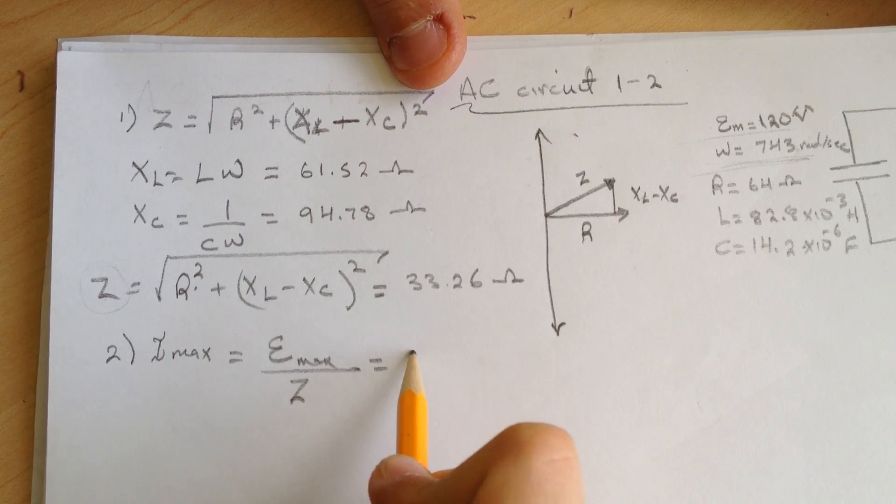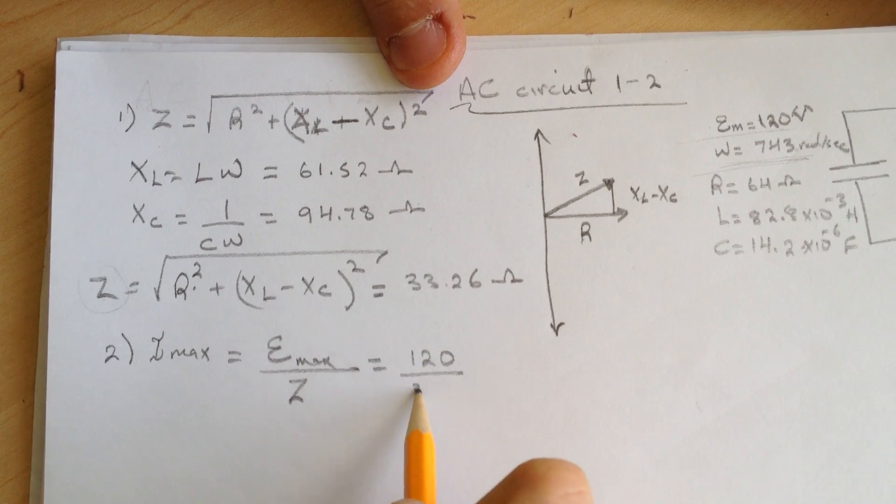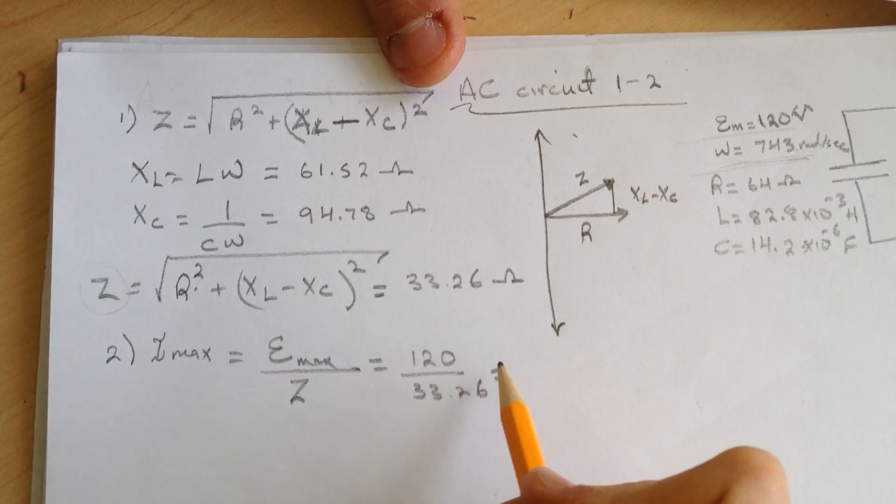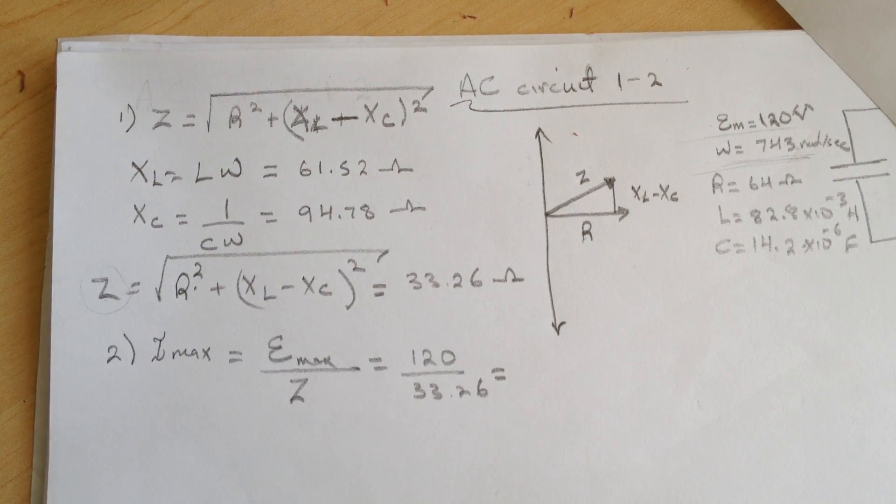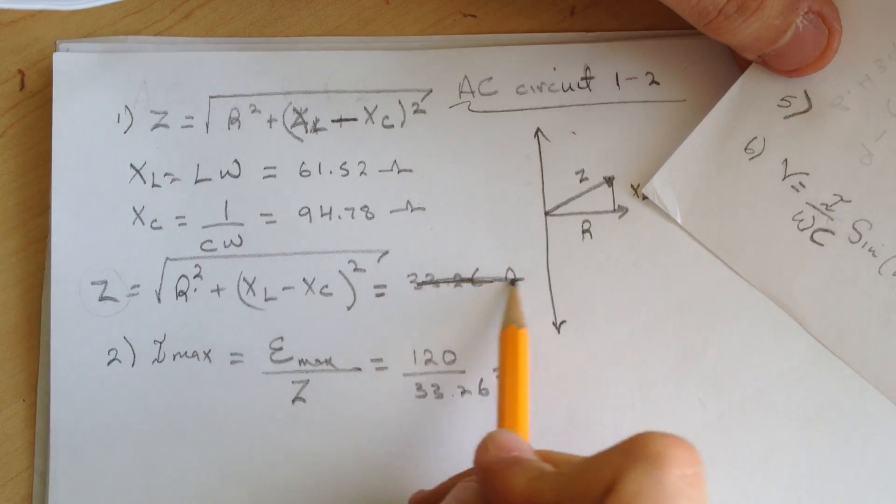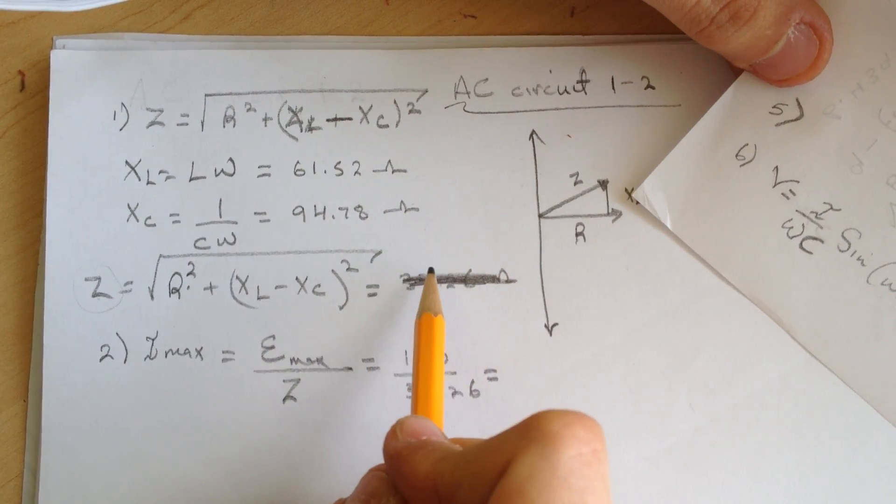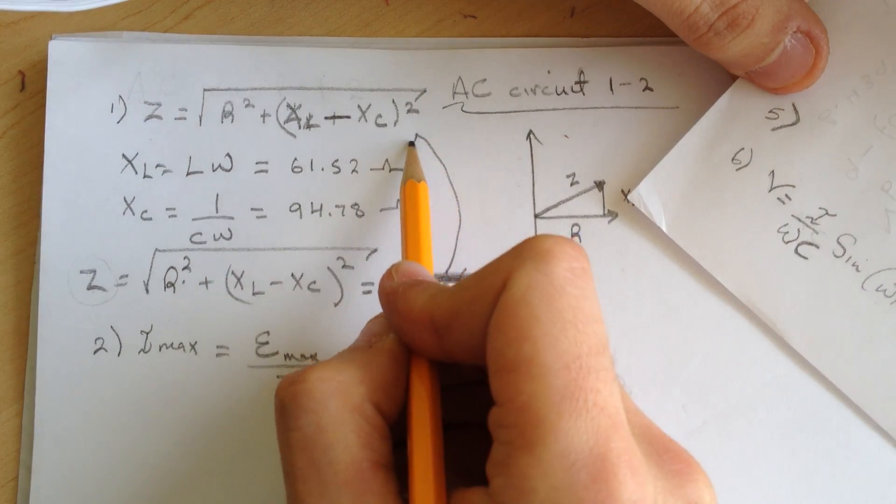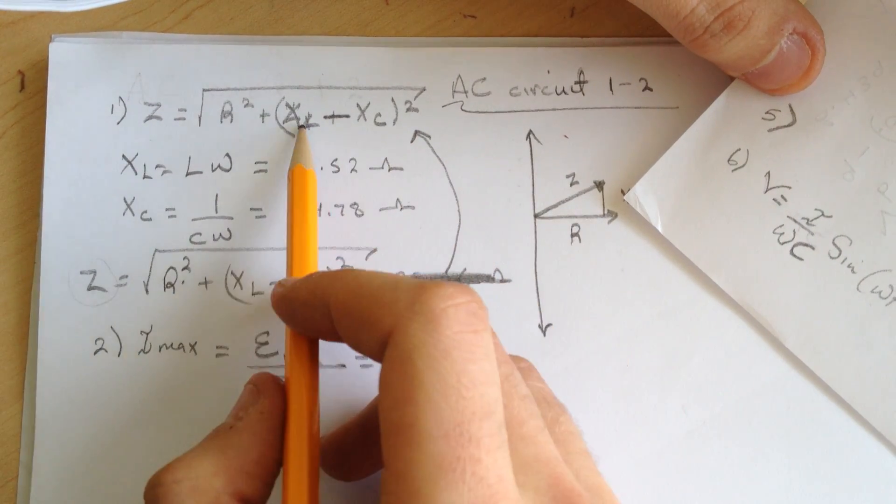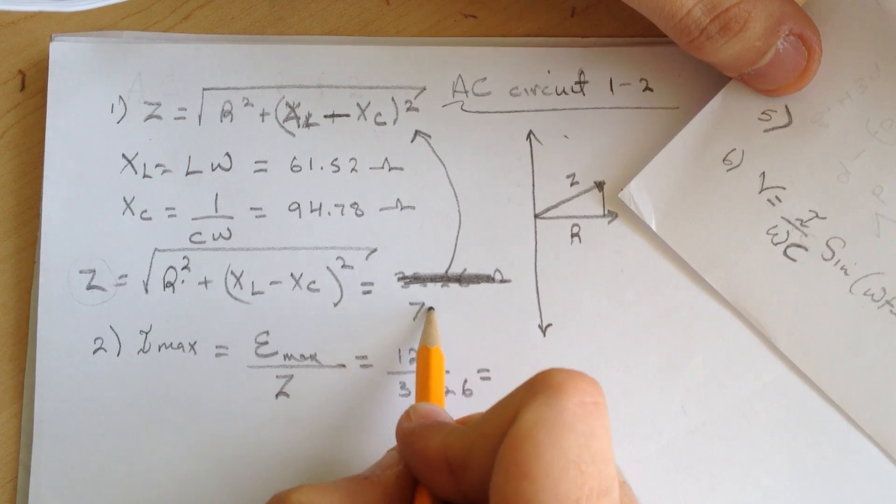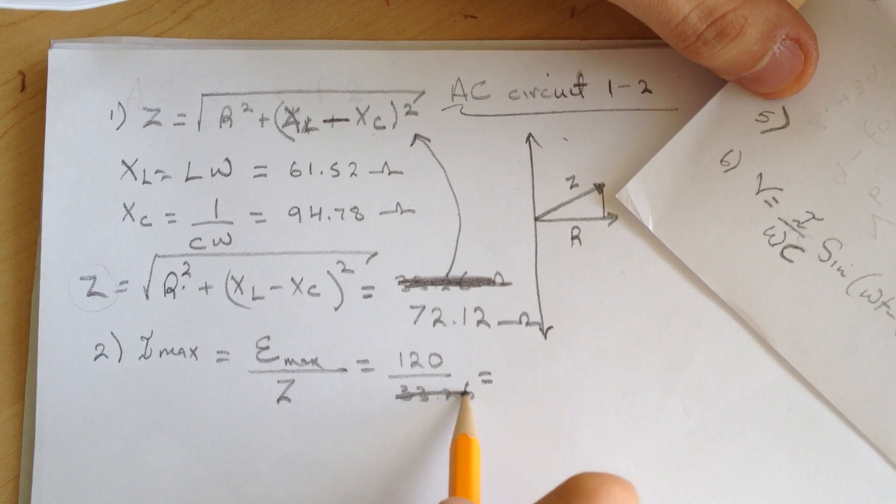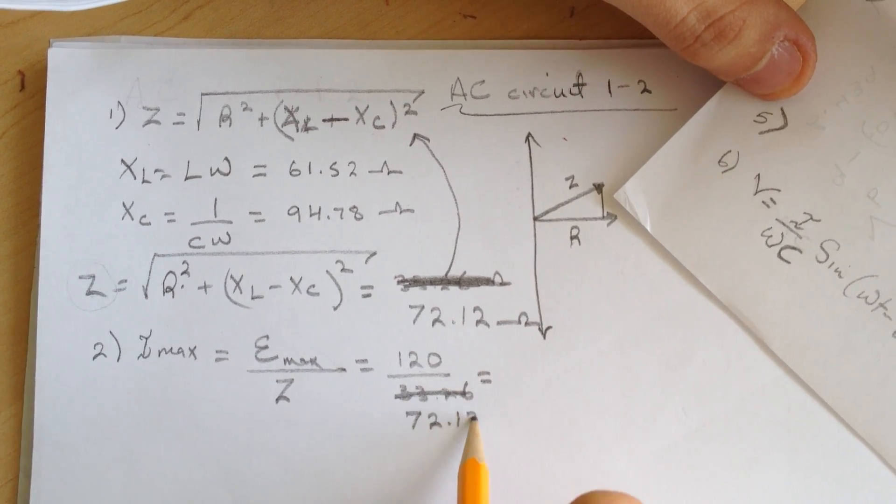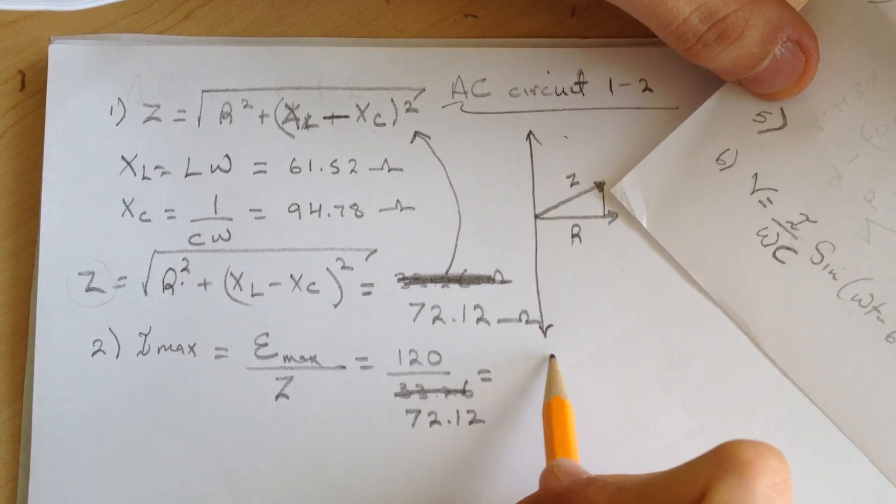So it's 120 divided by 33.26. And for this guy I got... this is not the right value for this. This is the right value for this one for the XL minus XC. For this one I got 72.12 ohms. So this one is 72.12 ohms.